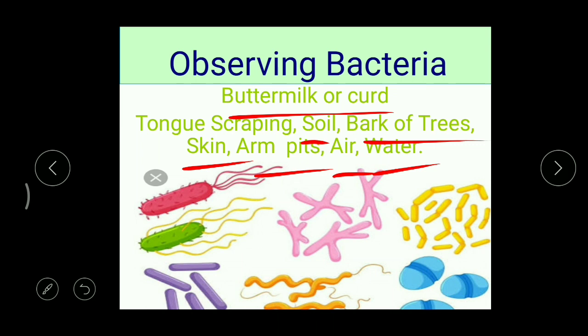In this picture you can find different types of bacteria available in different shapes. There is a rod shape, then a comma shape, then an oval shape, and a corkscrew shape. So bacteria are available in different shapes and sizes. They can be found in buttermilk, curd, tongue scraping, skin, soil, bark of trees, armpits, air, and water.